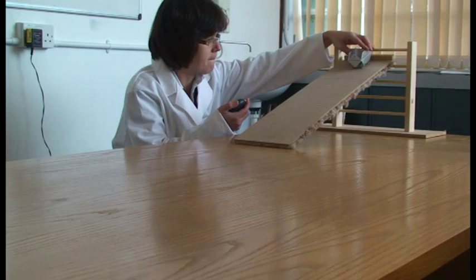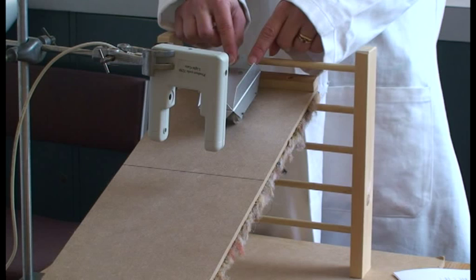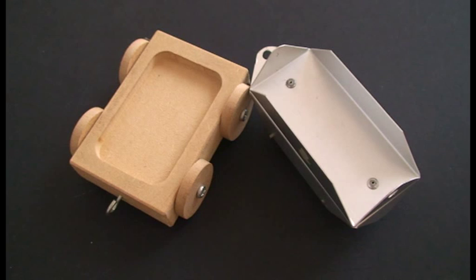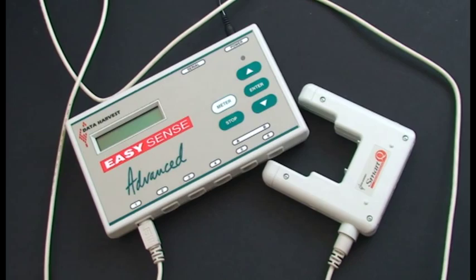To eliminate parallax and reaction time errors, light gates can be used. To do this, the trolley may need to be adapted or a different trolley may be necessary. Attaching the light gate to a data logger and computer software allows collection of more reliable, accurate, and precise data.